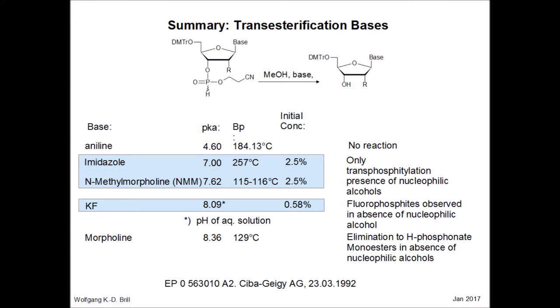The stronger the base, the faster the reaction will be. In turn, morpholine also drives the reaction very quickly. However, in the absence of alcohol, a different reaction may occur: this is the beta-elimination of the cyanoethyl group, giving a monosubstituted hydrogen phosphonate.